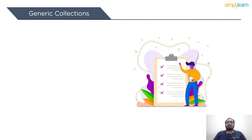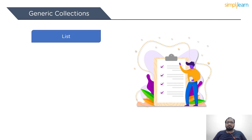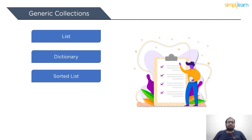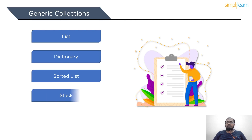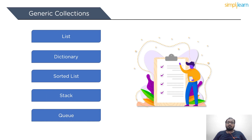If the collection is of int-type, then it can only have elements of int-type. There are several generic collections available: list, dictionary, sorted list, stack, and finally queue. Now let's go over the code on each of them.